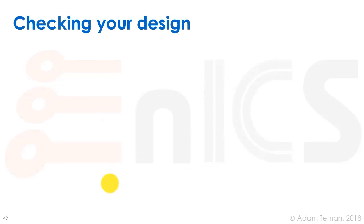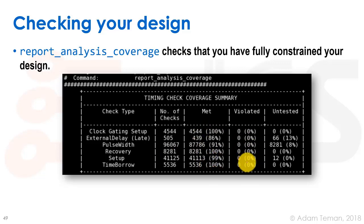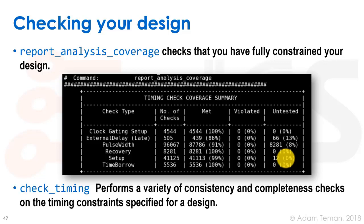Those are all the basic timing check categories run in our design. To start checking the design, one of the first things to do is run the report_analysis_coverage command, which shows all types of checks performed — setup, clock gating, pulse width, recovery, etc. — how many paths were checked, how many were met versus violated, and how many were untested. We should try to understand why things were untested or violated. We can also use the check_timing command to perform consistency and completeness checks on timing constraints, which can reveal unconstrained paths such as flip-flops that don't receive a clock.